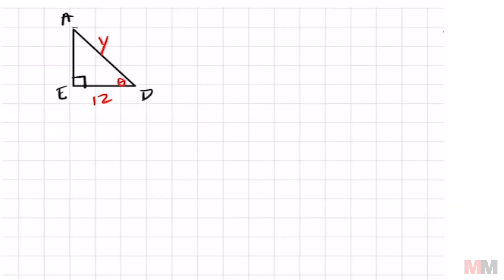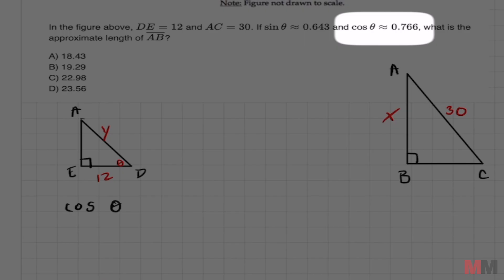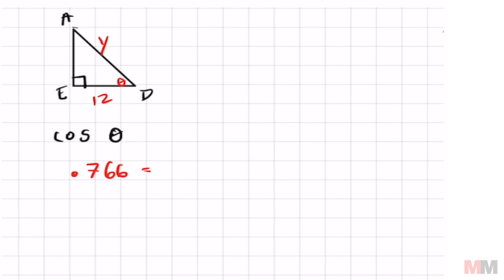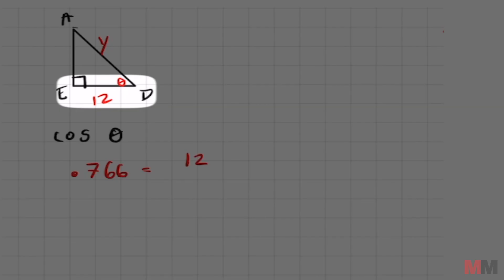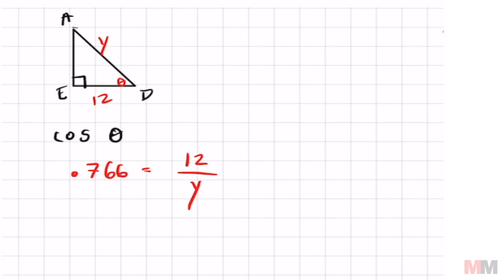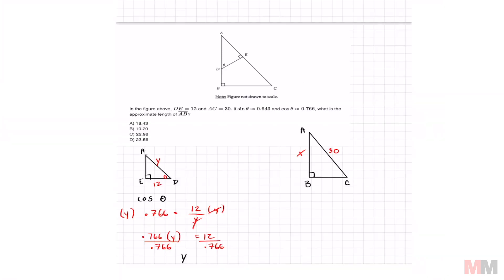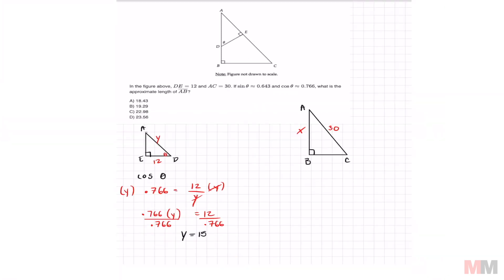To find Y, we set up this trig ratio cosine of theta which we are given as approximately 0.766 equals cosine is adjacent which is 12 over my hypotenuse which is Y. And let's solve for Y. Multiply both sides by Y and then divide by 0.766 and we get Y is approximately 15.66.